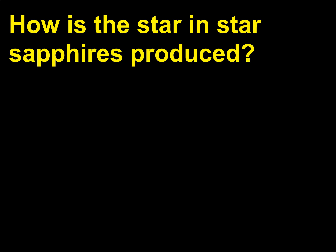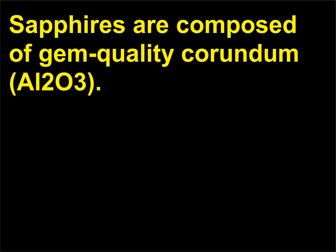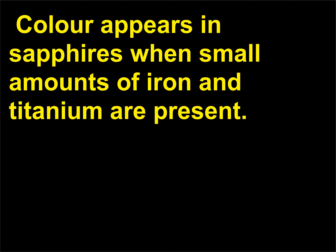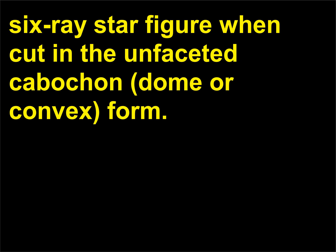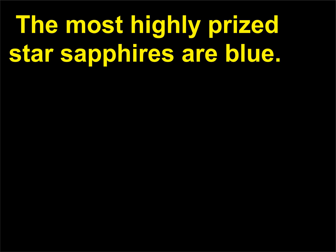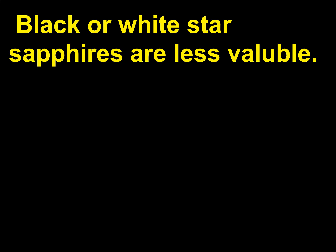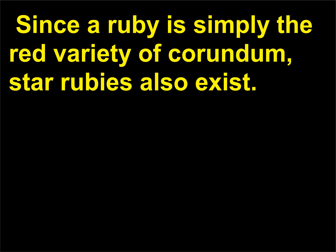How is the star in star sapphires produced? Sapphires are composed of gem-quality corundum (Al2O3). Color appears in sapphires when small amounts of iron and titanium are present. Star sapphires contain needles of the mineral rutile that will display as a 6-ray star figure when cut in the unfaceted cabochon (dome or convex) form. The most highly prized star sapphires are blue; black or white star sapphires are less valuable. Since a ruby is simply the red variety of corundum, star rubies also exist.